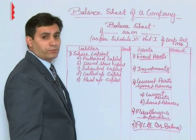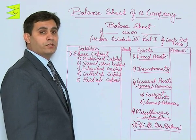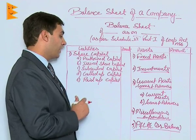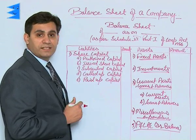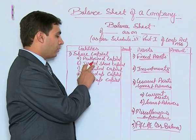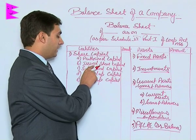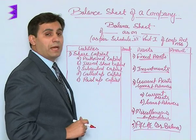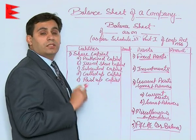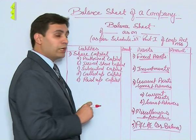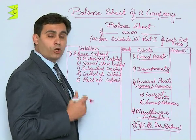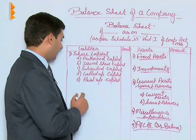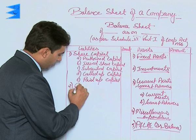Authorized capital means the capital with which the company has been registered. Issued share capital represents the amount of shares that the company has issued out of authorized capital — this amount will always be less than or equal to authorized share capital. Subscribed capital means the amount out of the issued amount that has been taken up by the public. Called up means the amount that the company has called till date, and paid up is the amount that has been paid by the shareholders.